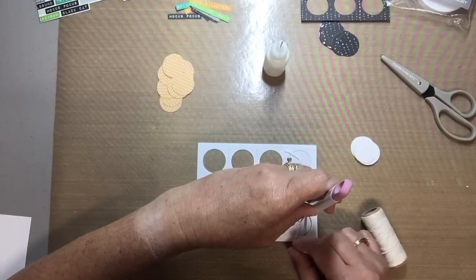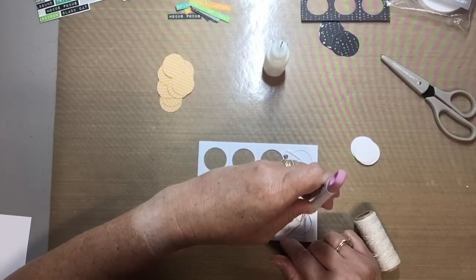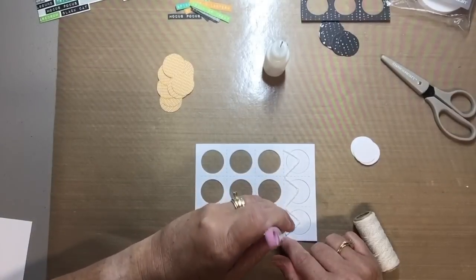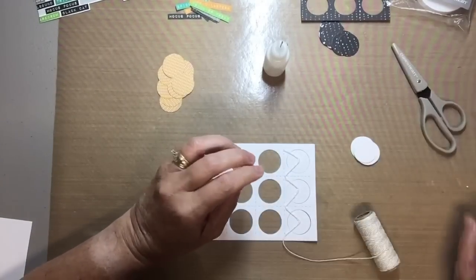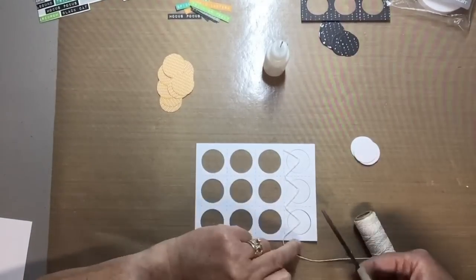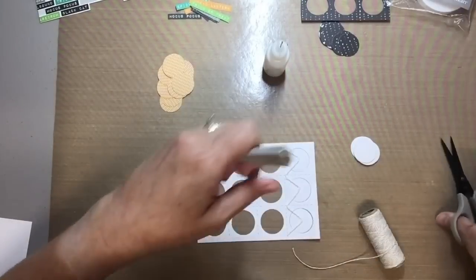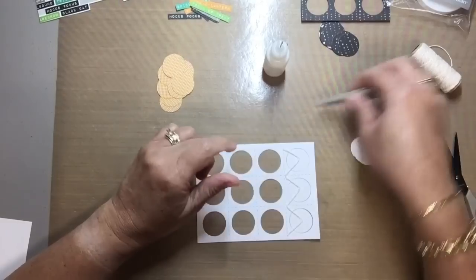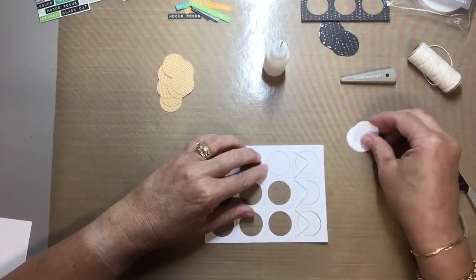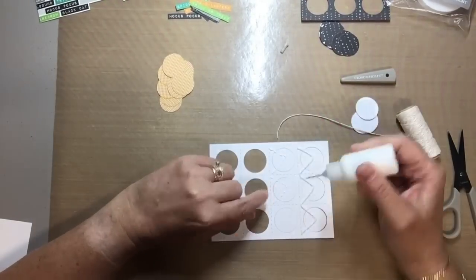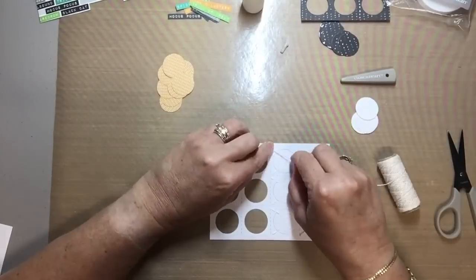And it really doesn't matter what color of baker's twine you used. I happen to be using my beige white one. I could have used any color. I probably should have used a brighter color to show up on the camera better, but it's going to be all covered up so you're not going to see it when the card is completed. And I just simply do this again for all four of the rows.